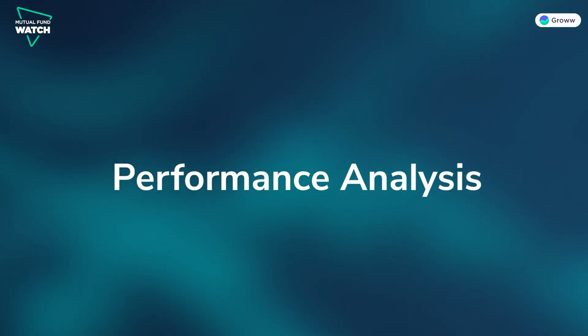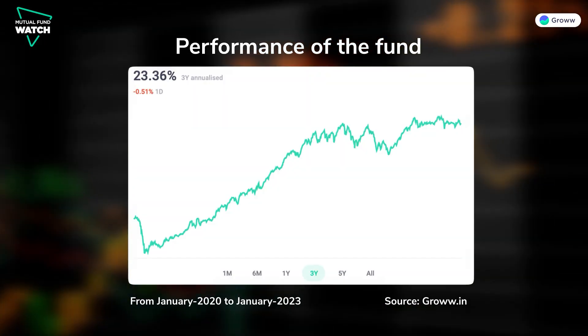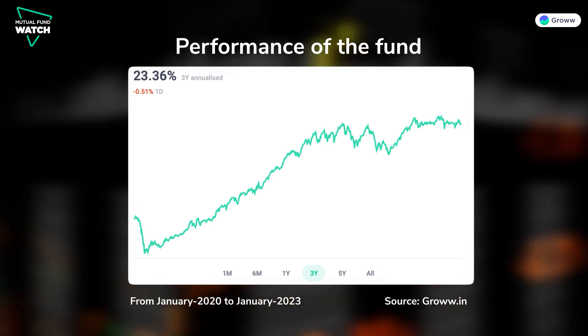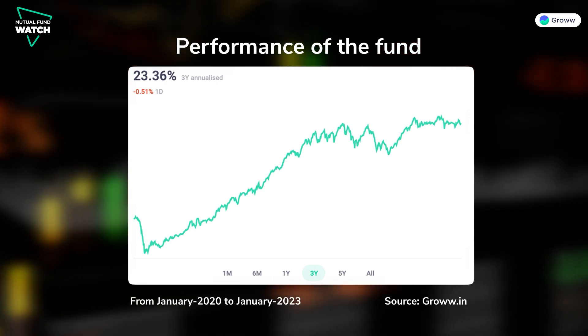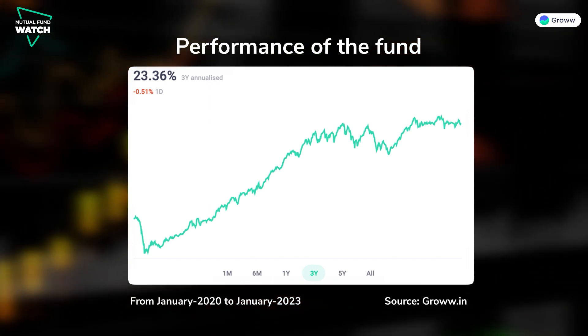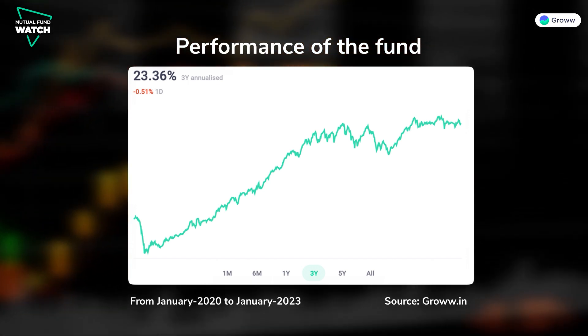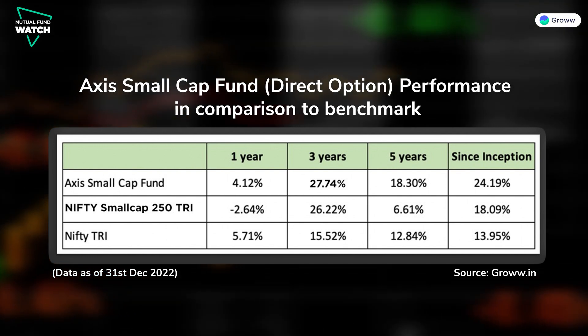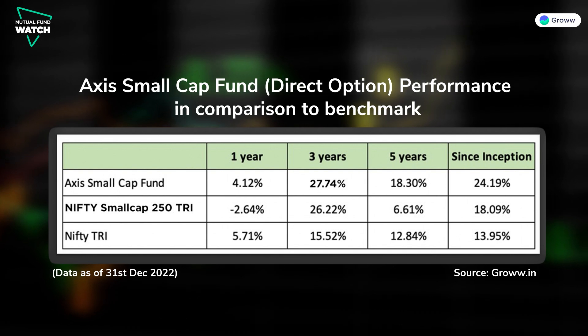Now let's analyze the fund's performance. The portfolio is diversified and stocks are held for the long term — let's see how these factors help performance. Looking at performance from January 2020 to January 2023, Axis Small Cap Fund has generated a CAGR of 23.36% over the last three years, and a since-inception return of 23.7%. Returns alone are not enough to measure performance; we need to compare the fund with its benchmark and peer group. To decide between active and passive funds, understanding the true value generation of actively managed funds is important.